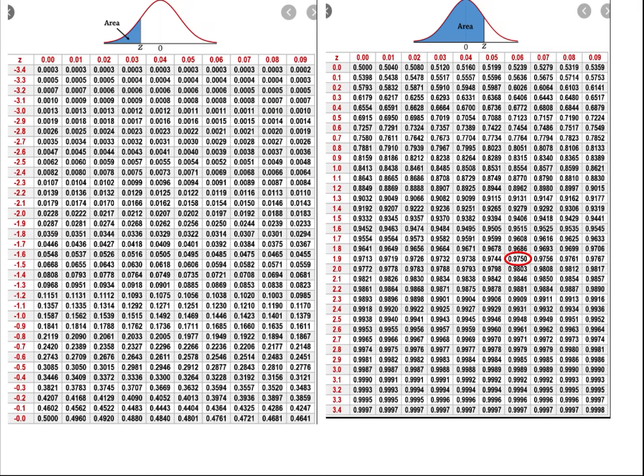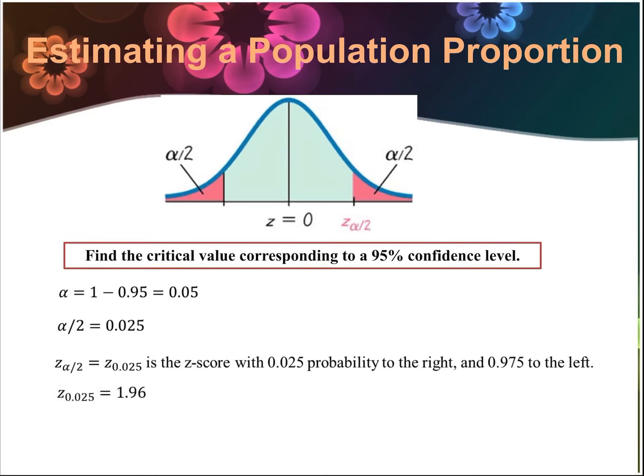In the probability chart, 0.9750 corresponds to the row for z = 1.9 and the column for z = 0.06, giving us a z-value of 1.96. So our z-value corresponding to a 95% confidence level — 5% split into 2.5% on top and 2.5% on the bottom — gives us z = 1.96. That's super common and will appear in a lot of homework problems.